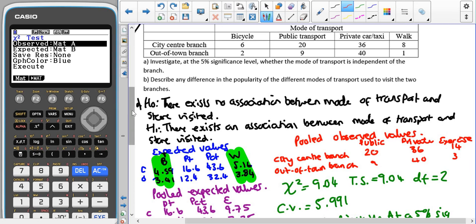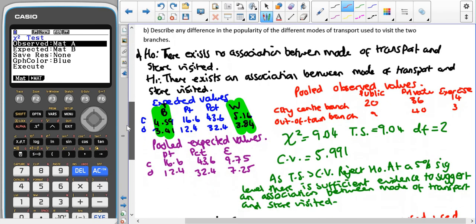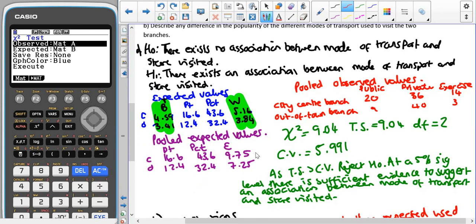So then type in those in this time and we calculated our pooled expected values using the calculator and you can see again that the public transport ones have stayed the same the private car slash taxis have stayed the same and if we were to add the bike and walk expected values together we would end up with these ones and now none of them are less than 5. So then I wrote down my chi squared value which is my test statistic and my degrees of freedom from the calculator from here.